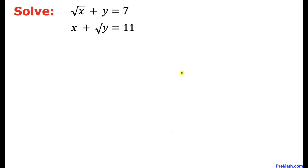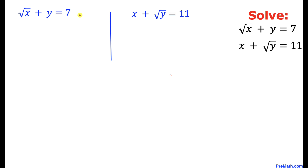Welcome to Pre-Math. In this video tutorial, we are going to solve these given simultaneous equations: square root of x plus y equals 7, and x plus square root of y equals 11. Let's get started with the solution. I have copied down these two equations.